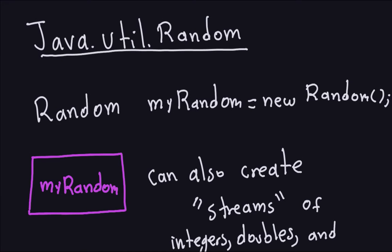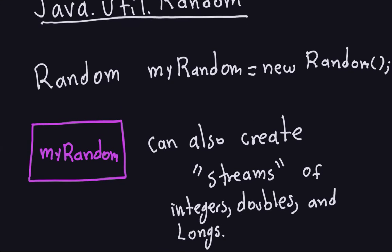Hello and welcome again. This is the fourth part of the random numbers in Java, and we are still talking about the Random object. We took an object called myRandom, created with one line of code, and it produces a lot of things: integers, longs, doubles, booleans, and so on.